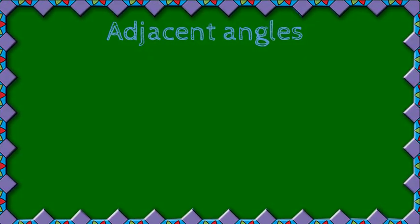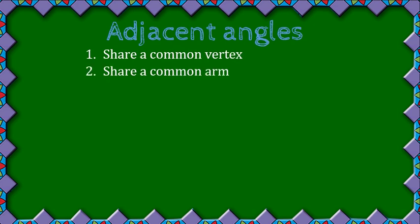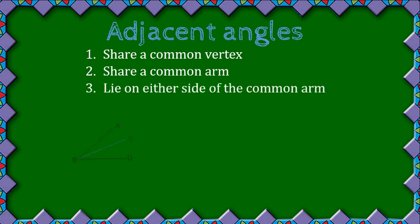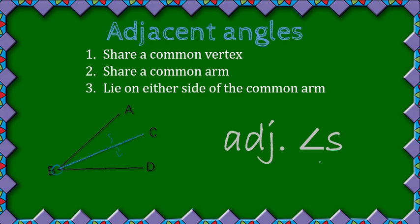First of all, we have adjacent angles. The properties of adjacent angles are: one, they share a common vertex; two, they share a common arm; and three, they lie on either side of a common arm. For example, ABC and CDE are adjacent angles — they share a common vertex, a common arm, and lie on either side of that common arm. Whenever you use adjacent angles in questions, the reason you give is 'adjacent angles'.